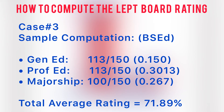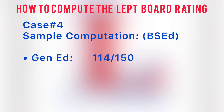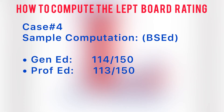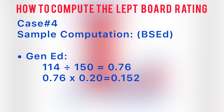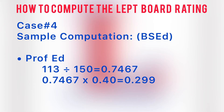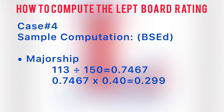To pass the board, the BS ed taker must have a minimum score of: general education — 114 out of 150, professional education — 113 out of 150, majorship — 113 out of 150. For general education: 114 divided by 150 equals 0.76 times 0.20 equals 0.152. For professional education: 113 divided by 150 equals 0.7467 times 0.40 equals 0.299. For majorship: 113 divided by 150 equals 0.7467 times 0.40 equals 0.299.